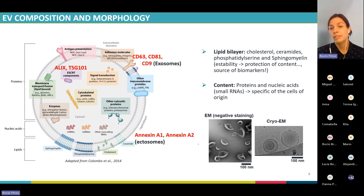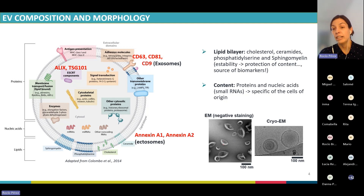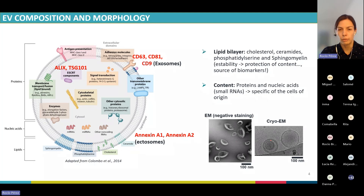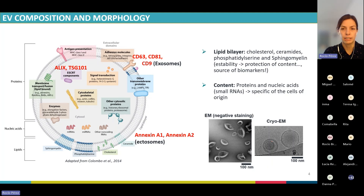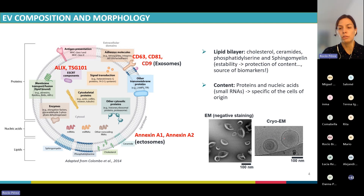Regarding morphology, when we explore EVs by traditional electron microscopy, they remind us of erythrocytes with a biconcave morphology. But when we see them by cryo-electron microscopy — with instant freezing without fixation compounds like paraformaldehyde — we can see that EVs are completely spherical structures with a double lipid membrane.